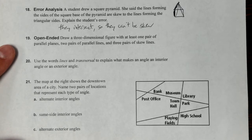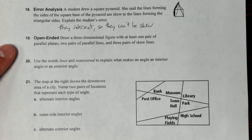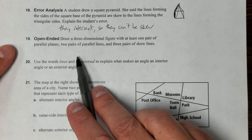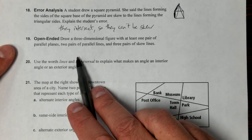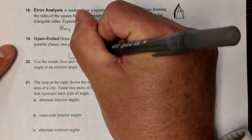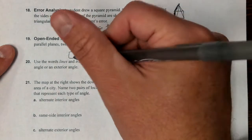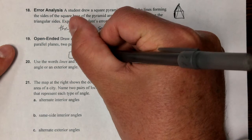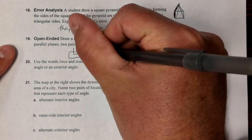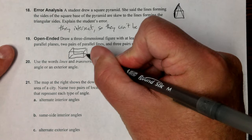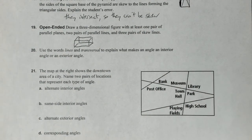Number 19: draw a three-dimensional figure with at least one pair of parallel planes, two pairs of parallel lines, and three pairs of skew lines. The easiest way I'm going to draw a rectangular prism for this - just draw a rectangle like that, and then draw a rectangle the same size that's a little bit to the right or left, and then connect top to top, bottom to bottom, side to side, and that would fit all the criteria.